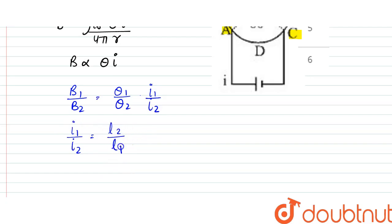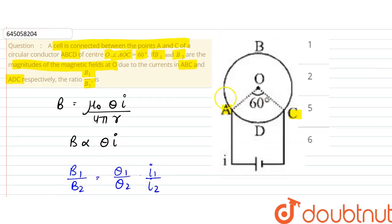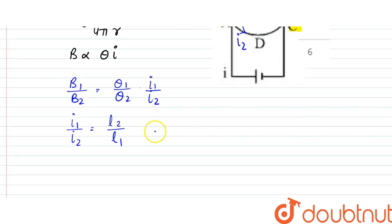l2 by l1, the inverse ratio. Since if the length is longer then the current is lesser, so that is inversely proportional. So that would be equal to theta 2 by theta 1.